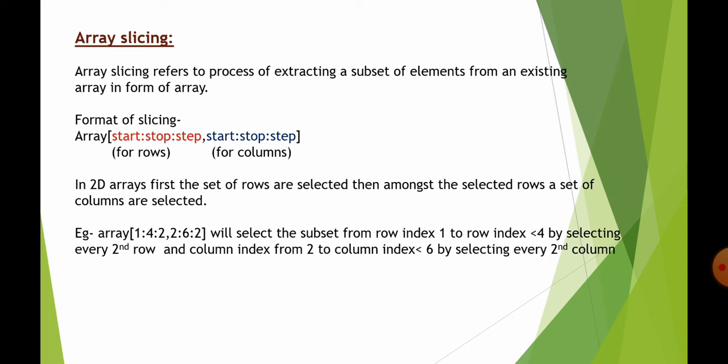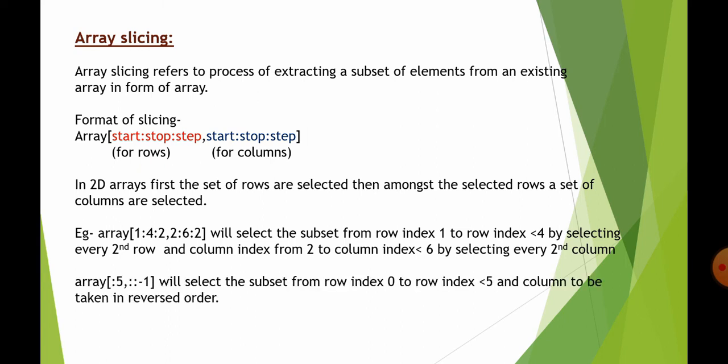For example, array[1:4:2, 2:6:2]: before the comma applies to rows and after the comma applies to columns. For rows, starting at index 1, stopping before 4, with step 2 — we consider rows at index 1 and 3. For columns, starting at index 2, stopping before 6 (i.e., up to 5), with step 2 — every second column is considered. We'll clarify this further with another example.